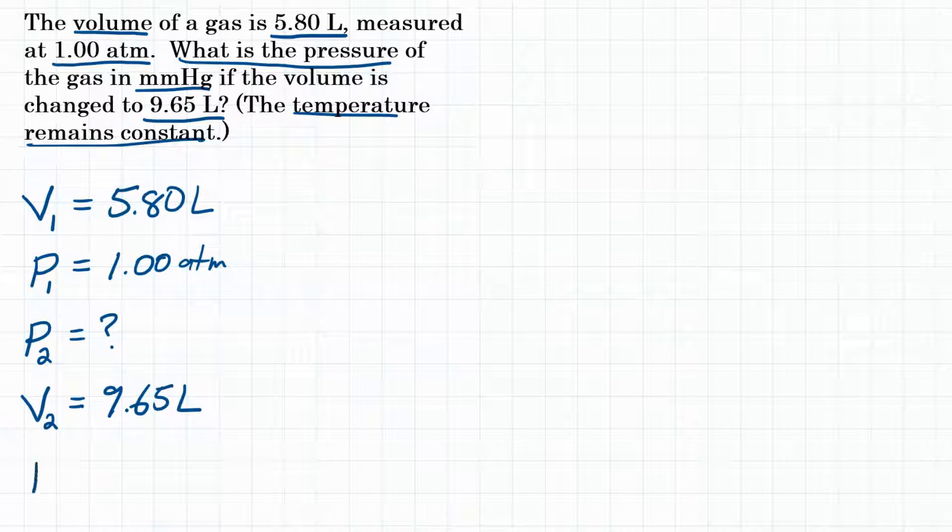So temperature is staying the same. We do not have to worry about temperature at all. So let's pretend that doesn't exist in this problem. Hopefully you already know that this is a Boyle's Law problem because we were given two volumes and one pressure looking for the other pressure. And Boyle's Law is P1 V1 equals P2 V2. So that is the formula we will use to solve this problem.